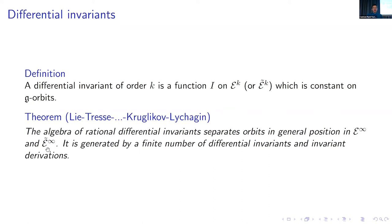This is one of the main theorems, actually a consequence of the general Lie-Tresse theorem, in its most recent form a contribution by Boris Kruglikov and Valentin Lychagin. For our particular case, it says that the algebra of rational differential invariants separates orbits in general position for both Kundt spacetimes and degenerate Kundt spacetimes. This algebra is generated by a finite number of differential invariants and invariant derivations.